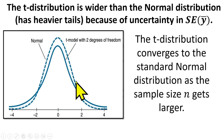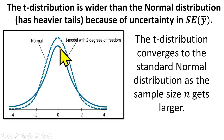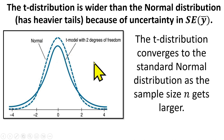So that explains it. As the sample size gets larger, the t-distribution will move closer and closer to a normal distribution. When sample sizes are in the hundreds, the t-distribution and the normal distribution are almost the same.